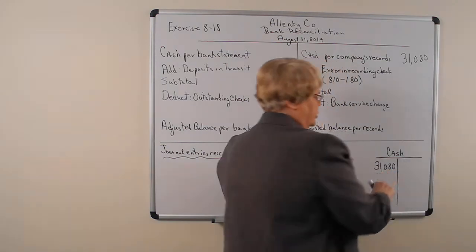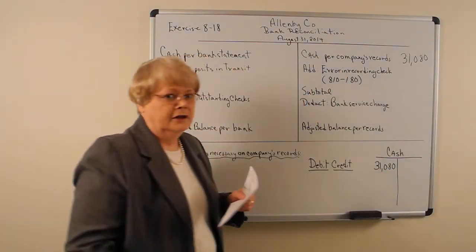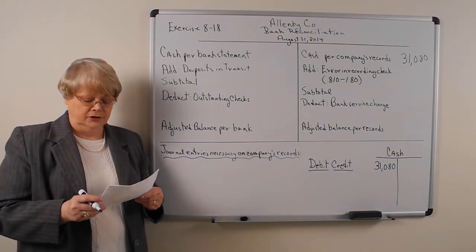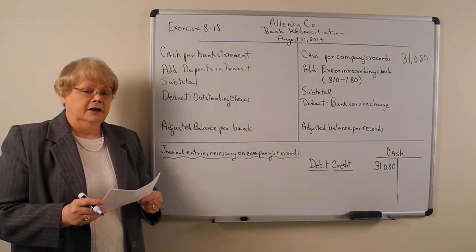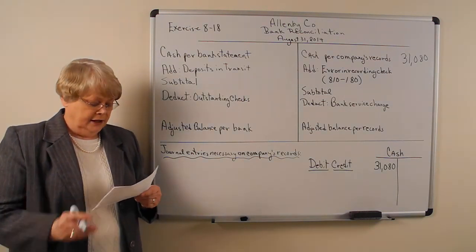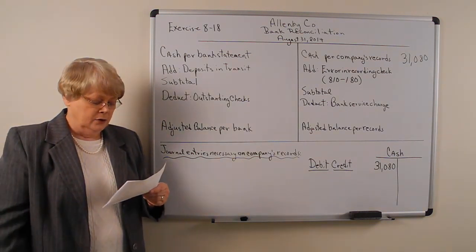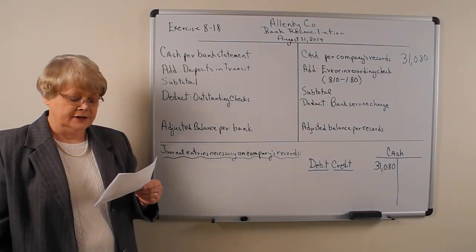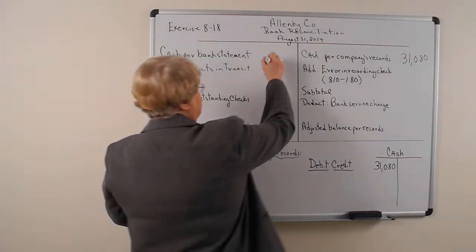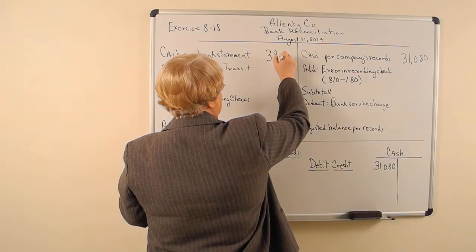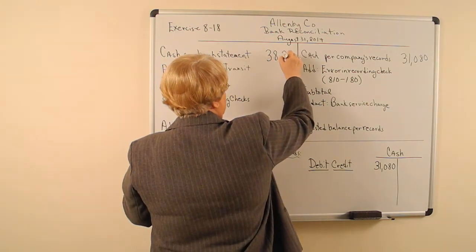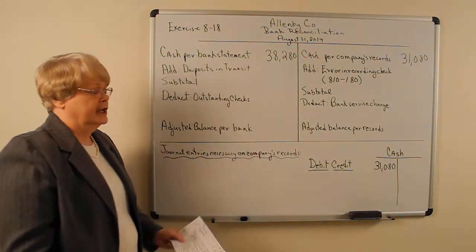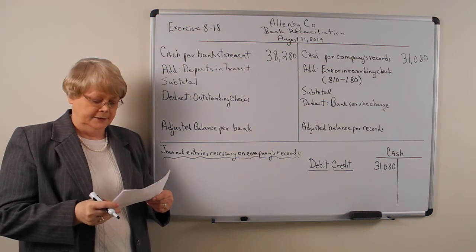I'll also put that down here in the T-account, which represents the general ledger account. The next item is the cash balance according to the bank statement on August 31st, which is $38,280. I'll put that here — cash per bank statement.